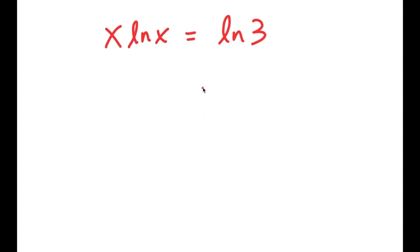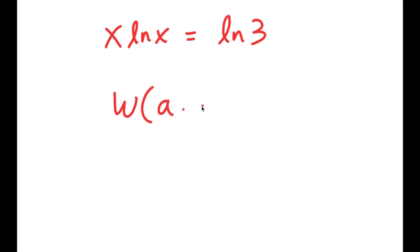Now I'm going to use an important formula called the W Lambert formula. It states that if I take the W of something in the form a times e to the power of a, then this is equal to a. So this is the W Lambert formula.